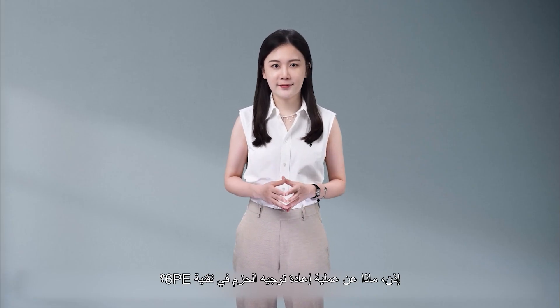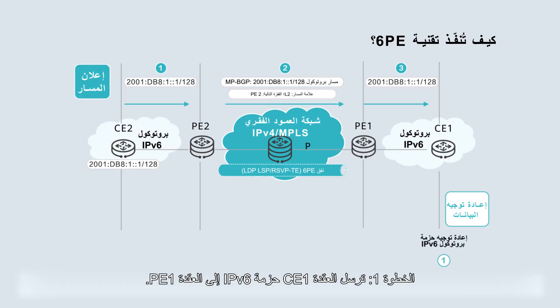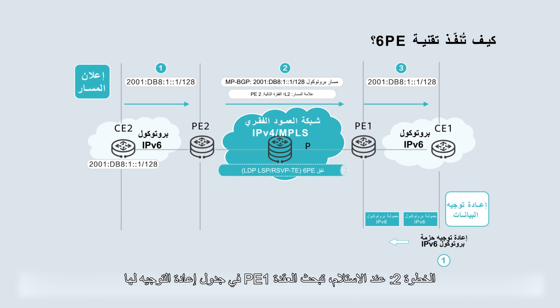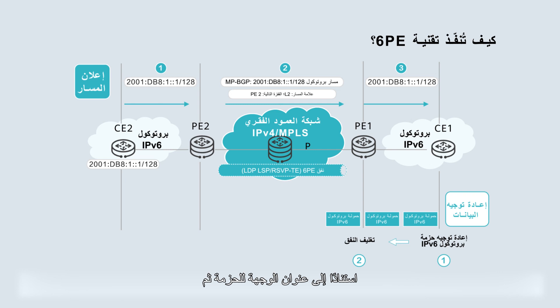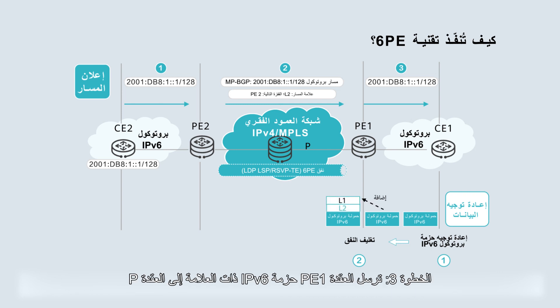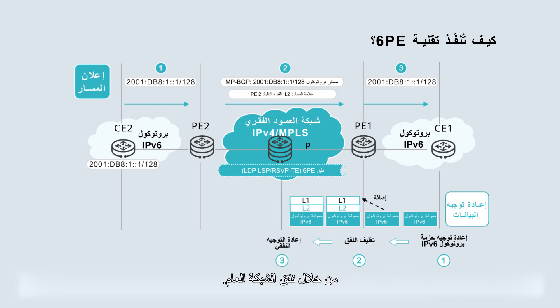So what about the 6PE packet forwarding process? Step 1: CE1 sends an IPv6 packet to PE1. Step 2: upon receipt, PE1 searches its forwarding table based on the destination address of the packet, and then adds an inner label and an outer tunnel label to the packet. Step 3: PE1 sends the labeled IPv6 packet to the P through the public network tunnel.